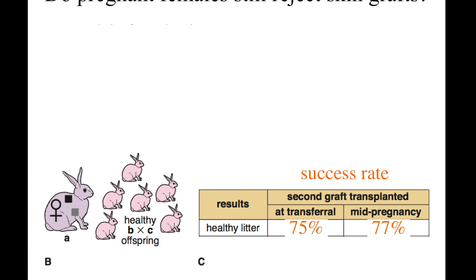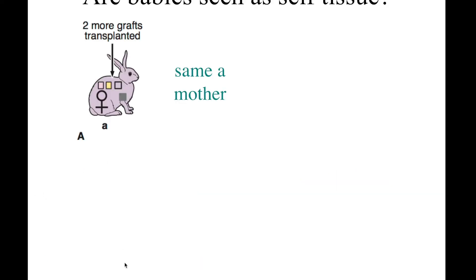It's a little bit technically challenging to implant these embryos, so it doesn't always work — that's why the numbers aren't 100%. But it is possible for the mother to be pregnant, successfully gestate the baby rabbits, deliver them, and still have a healthy immune response rejecting an allograft.